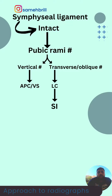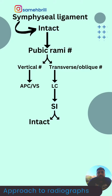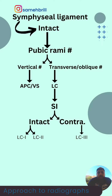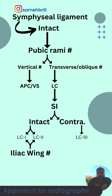I go directly to the sacroiliac joint. If the sacroiliac joint is not disrupted, that means it might be an LC1 or an LC2. If it's disrupted on the contralateral side, that's an LC3. To differentiate between LC1 and LC2, I take a look at the iliac wing. If there is a fracture in the iliac wing, that's an LC2. If there is no fracture of the iliac wing, that might be an LC1.